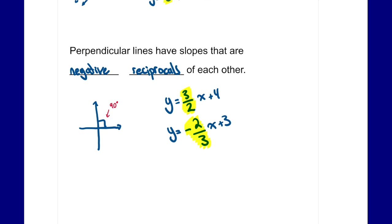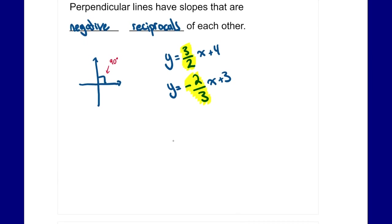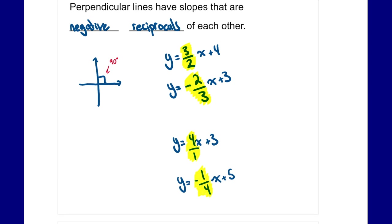So those slopes are negative reciprocals — they are perpendicular. For example, if you had a whole number slope like y equals 4x plus 3, we think of 4 as 4 over 1, so the perpendicular slope would be negative 1 over 4. Negative reciprocal means opposite sign and flipped.